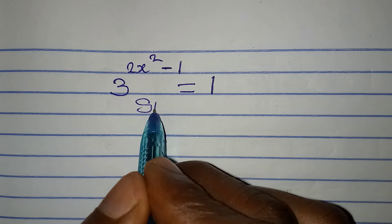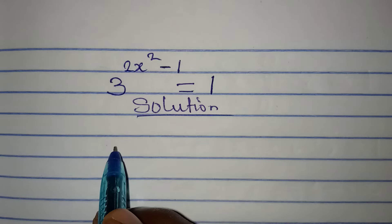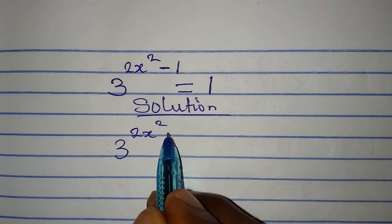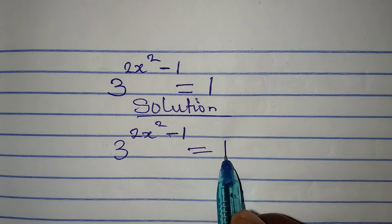Hello everyone, let's solve this problem. We have 3 to the power of 2x squared minus 1 equal to 1.